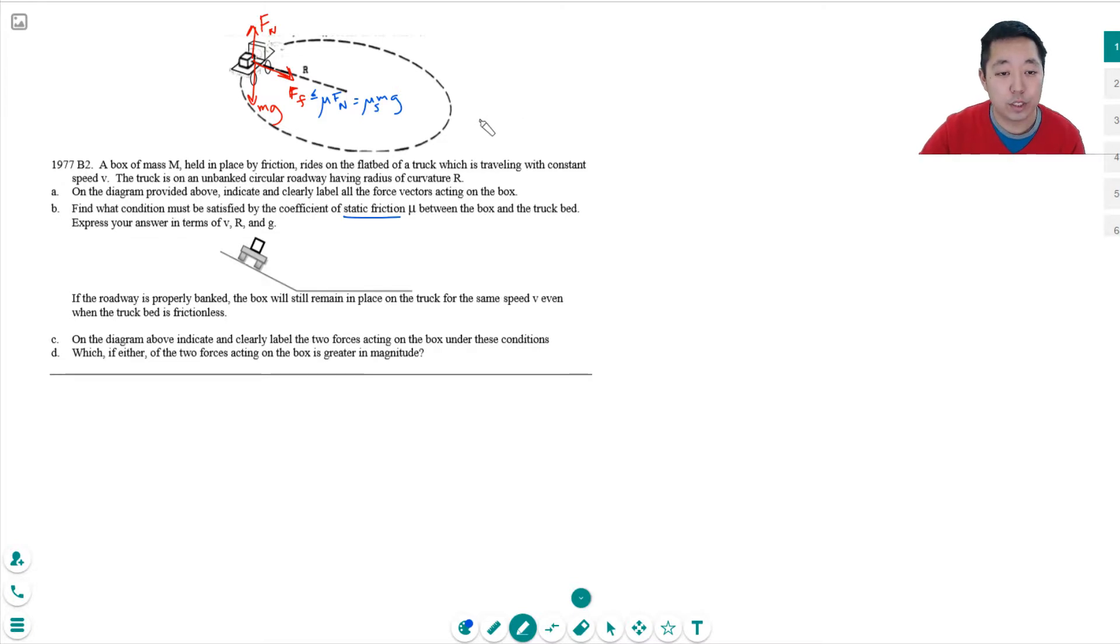So the force of friction has to be at least equal to, the net force has to equal mv squared over r. This is ma, but what kind of acceleration is this truck feeling? It's centripetal acceleration. So v squared over r.